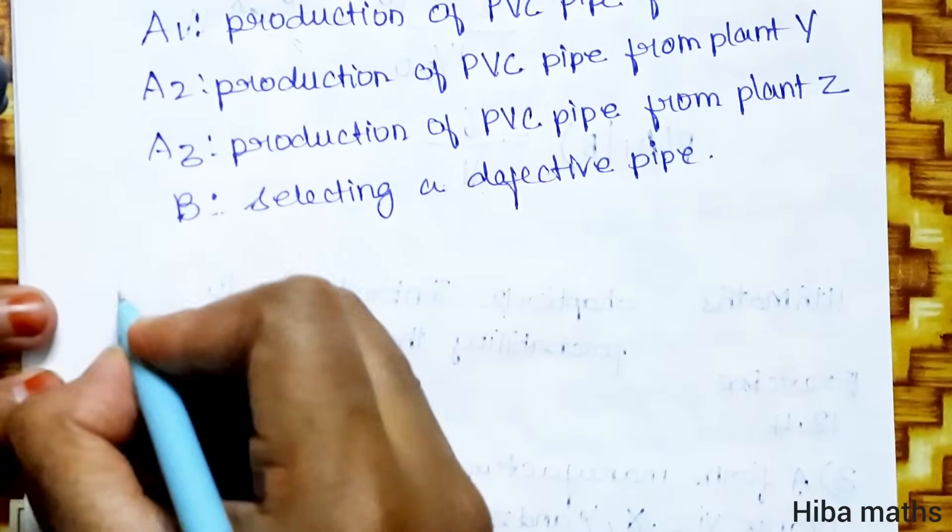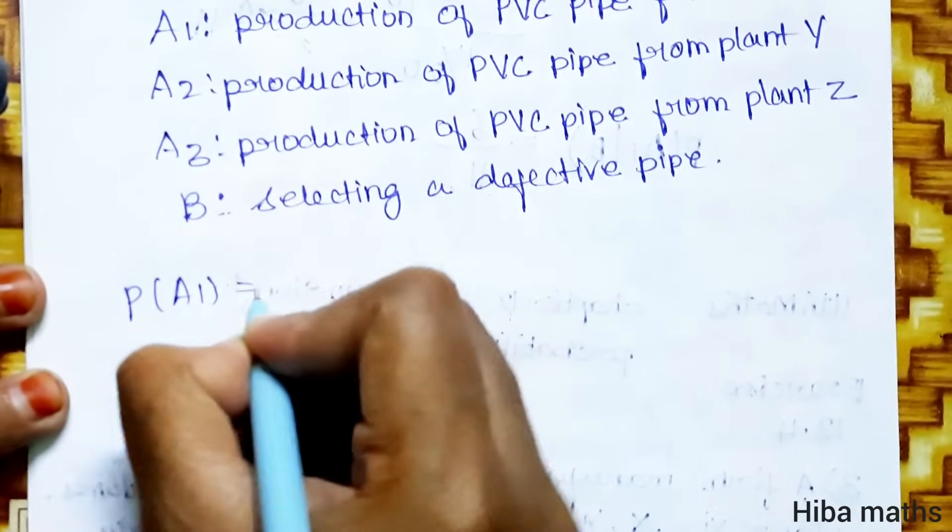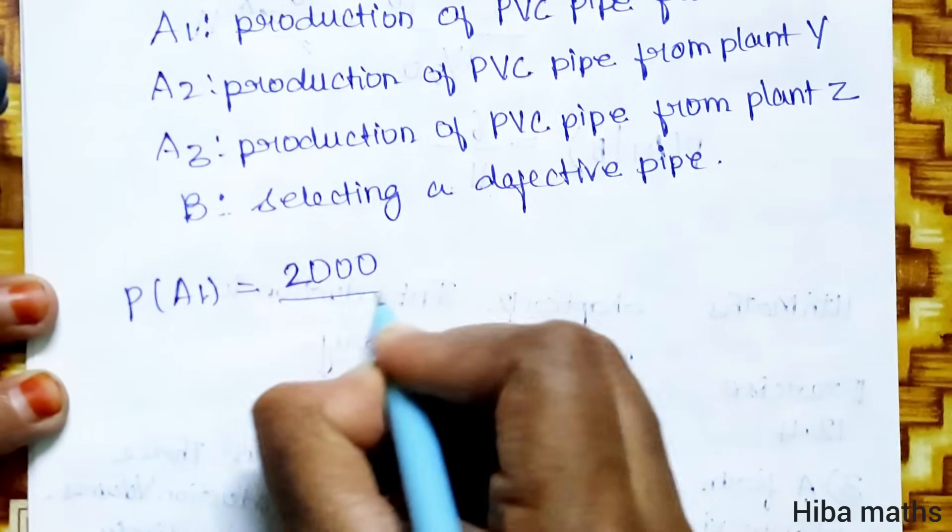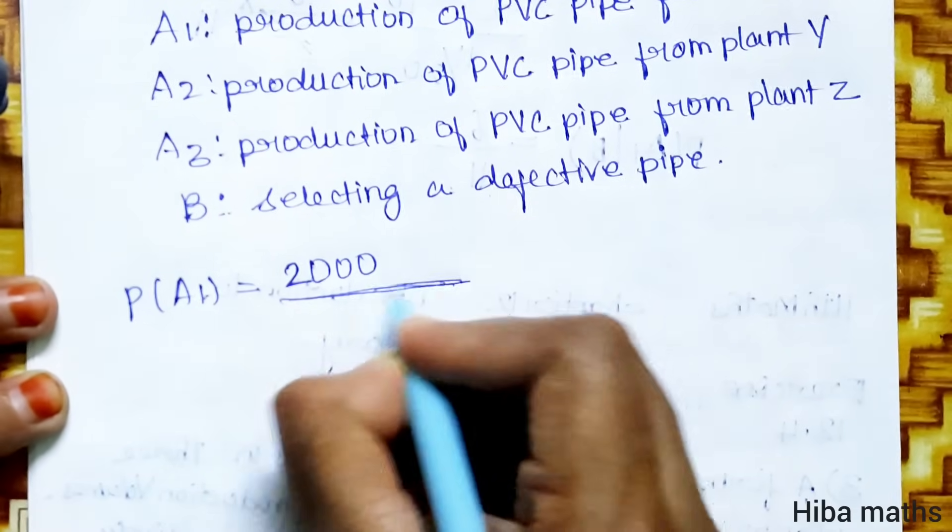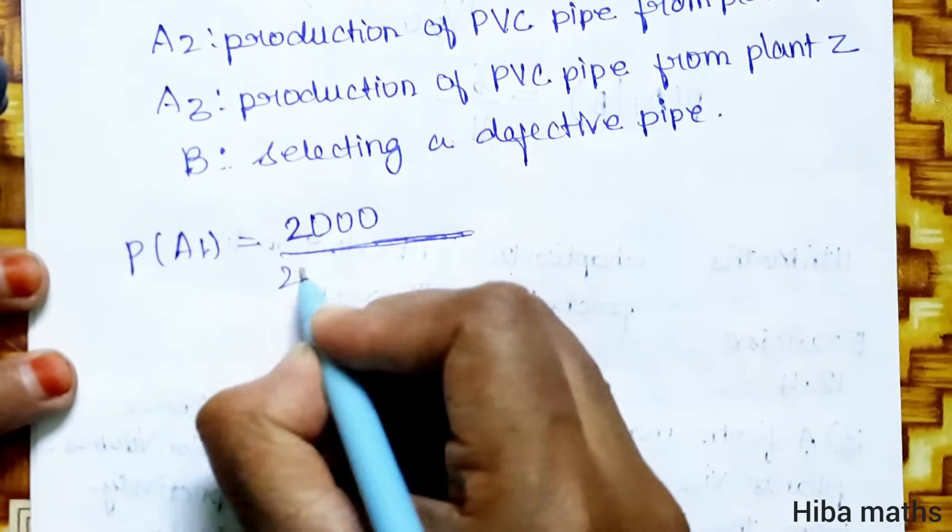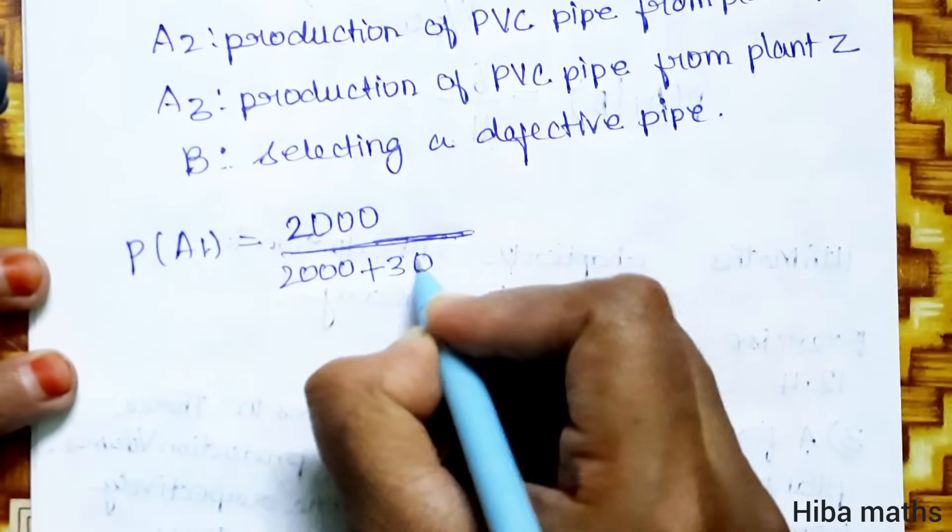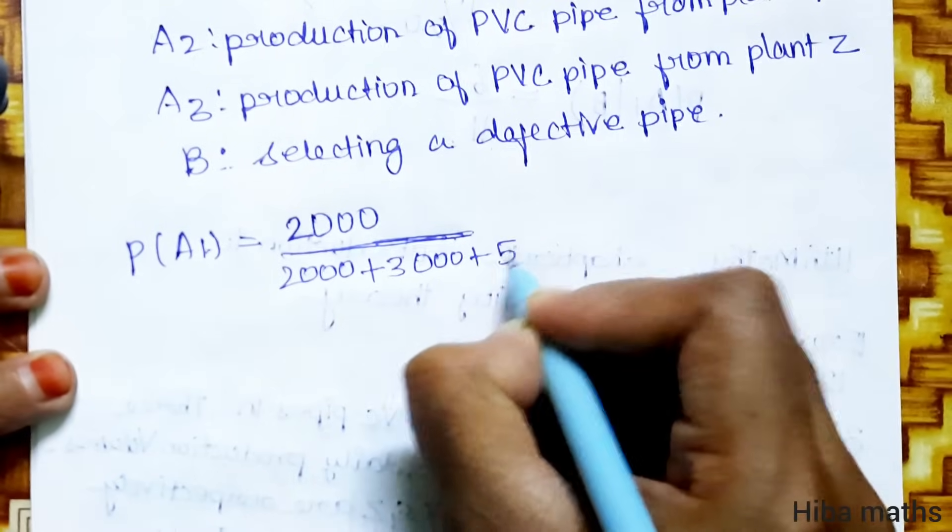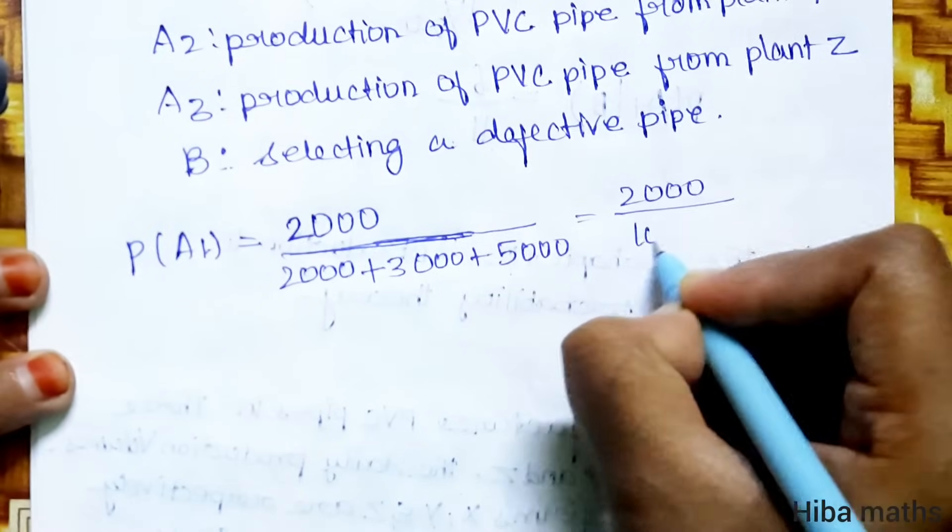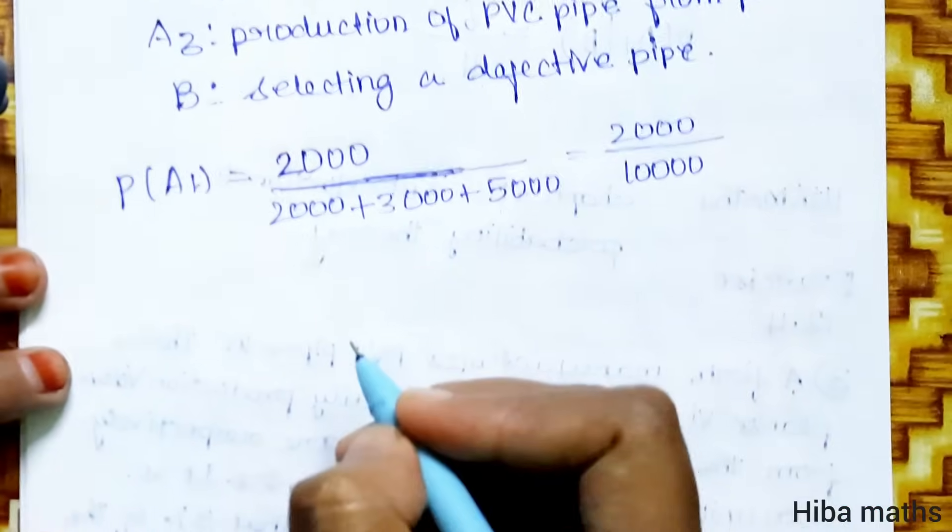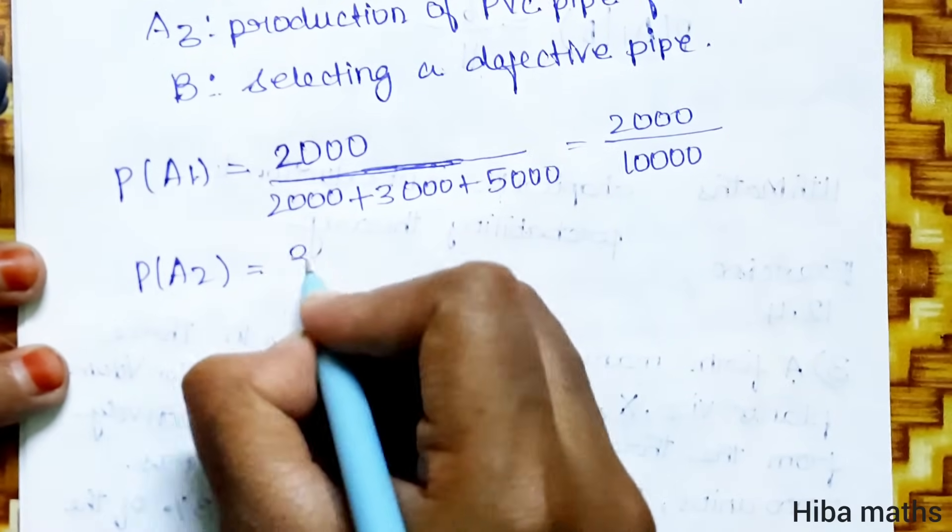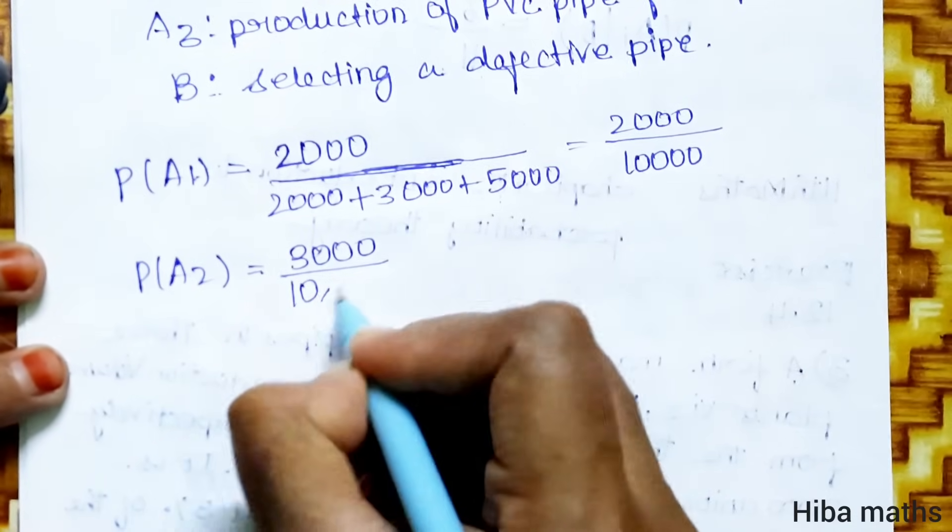To be, this is B of A1. A1 units produce 2,000 divided by total output. Total output is 3 plant production plus 2,000 plus 3,000 plus 5,000. That is equal to 2,000 by 10,000. P of A2, A2 is plant 2,000, total output is 10,000.